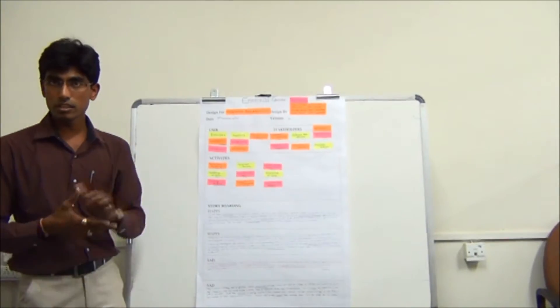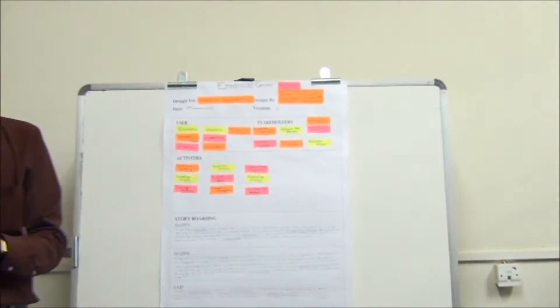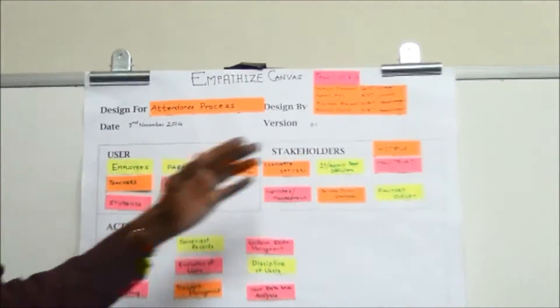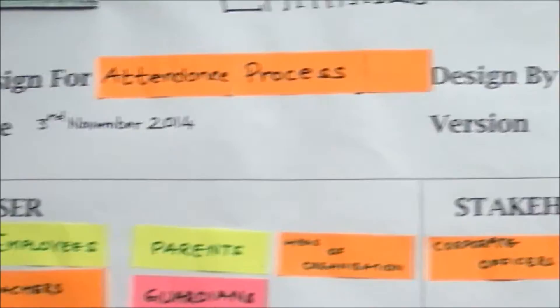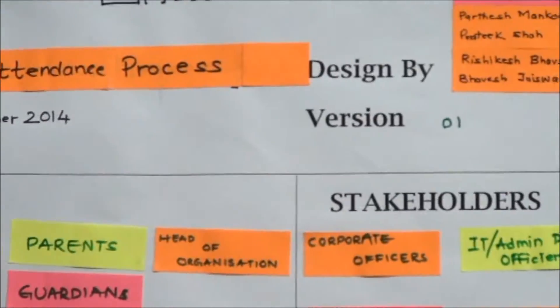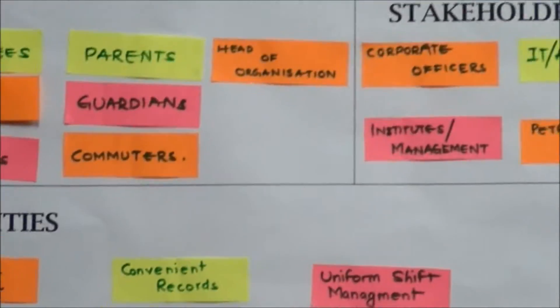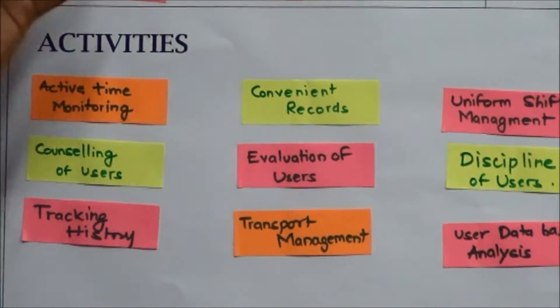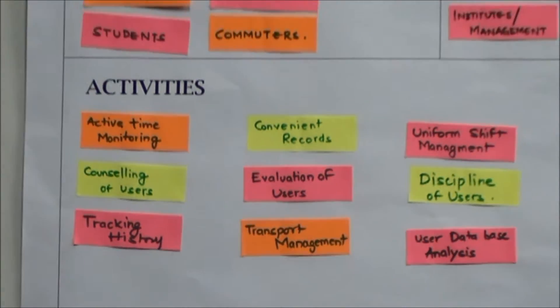In this attendance process, there are a number of segments — for example, users, stakeholders, activities, and then storyboarding. In storyboarding, we have written two happy stories and two sad stories. So let me start with the user.